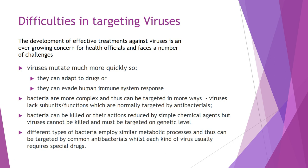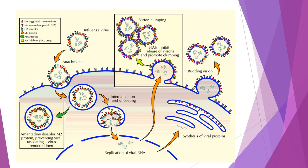Because bacteria are more complex, we can target them in more ways — through the production of the new cell wall or different metabolic processes — but we can't target those same processes when treating viruses. Bacteria can generally be killed or their actions reduced by chemical agents, but we can't kill a virus because they're not alive, so they have to be targeted on the genetic level. We need to stop the injection of that genetic material, stop its replication, or stop it from being released from the cell. We can't break down the virus itself because it's not living.